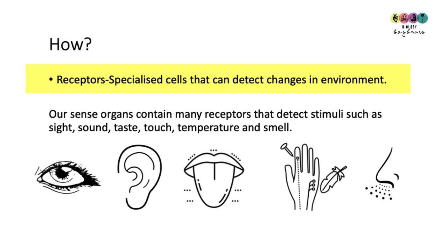We've got many organs in our body that are full of receptors. For example, our eyes detect light, our ears detect sound, our taste buds detect taste, and our skin is a huge sense organ with many receptors — it can detect pressure,